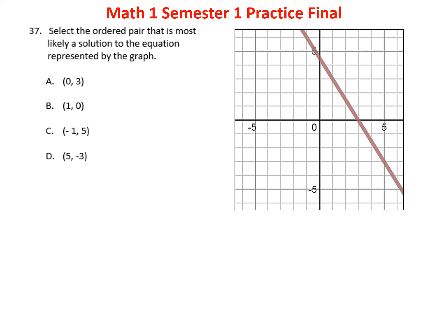Problem thirty-seven: just plot each point and see which lies on the line. The point (0, 3) is not on the line. The point (1, 0) is not on the line. The point (negative 1, 5) is close but not on the line. The point (5, negative 3) is on the line — that's our solution.